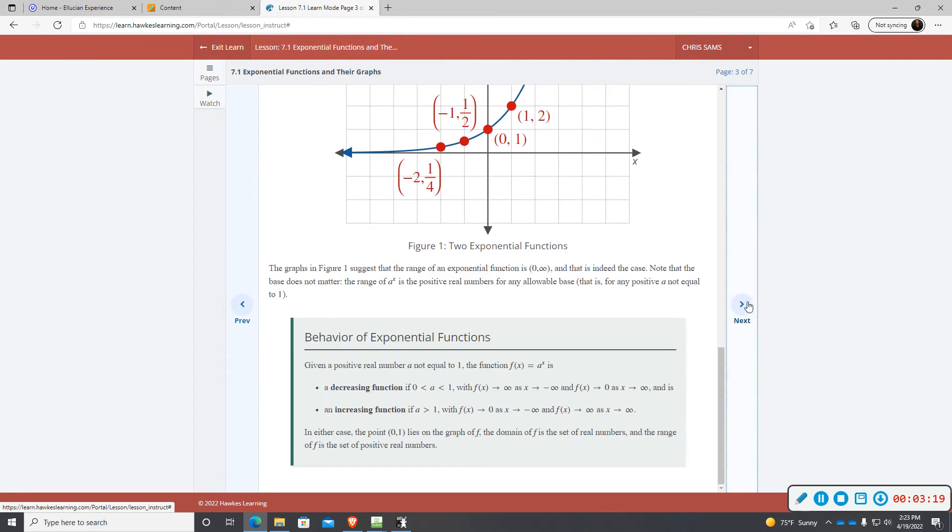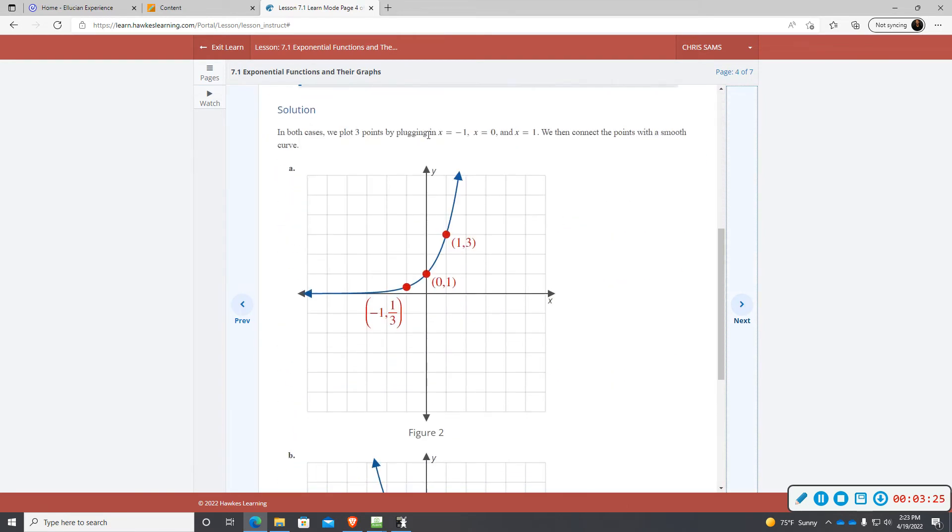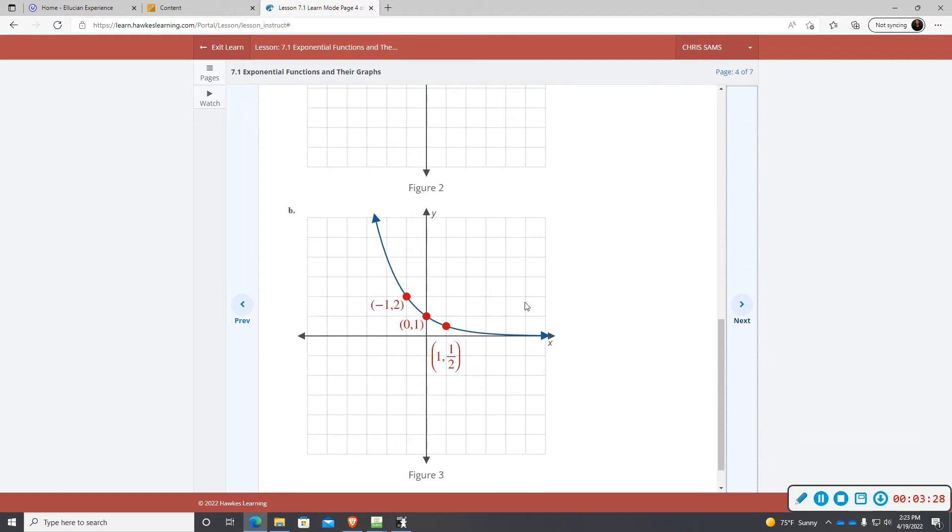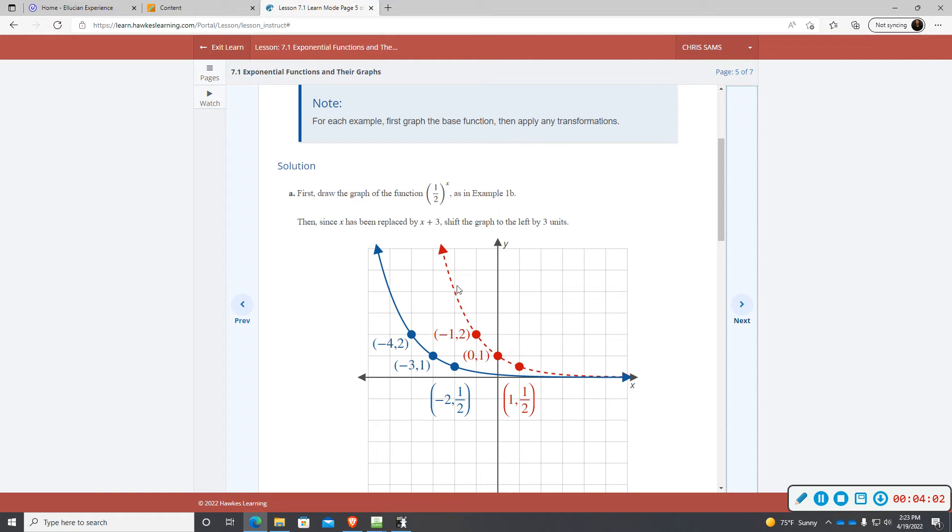Now, there are some other properties that we will look at. See these examples? This one has an x plus three. If you recall transformations, this is going to move your graph left or right. Because it's plus three, it's going to do the opposite. Normally, plus three is going right. But this plus three is going to shift it to the left. So, instead of this graph going through zero, one, it's going to get moved to the left.